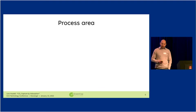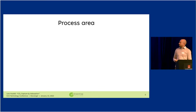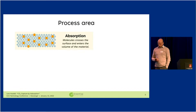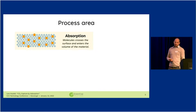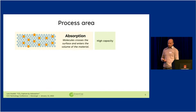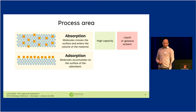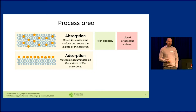Let's start with the first challenge — the reactive area or process area. We need to get a lot of air through, capture the CO2, and also store it temporarily. With absorption, molecules actually enter the volume of the material, so the positive side is we can use the entire volume and get high capacity for storing. However, the reactive area is only the surface, which is smaller, and if we want a large surface area we need to use a liquid in mist form or a gas, which causes containment problems. Another option is adsorption, where the molecule accumulates on the surface of the adsorbent itself.